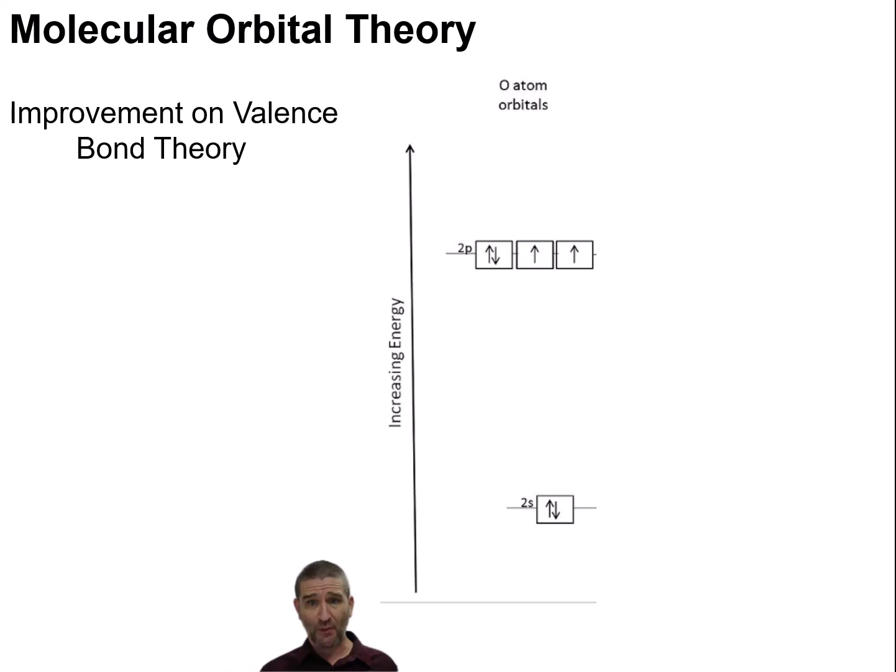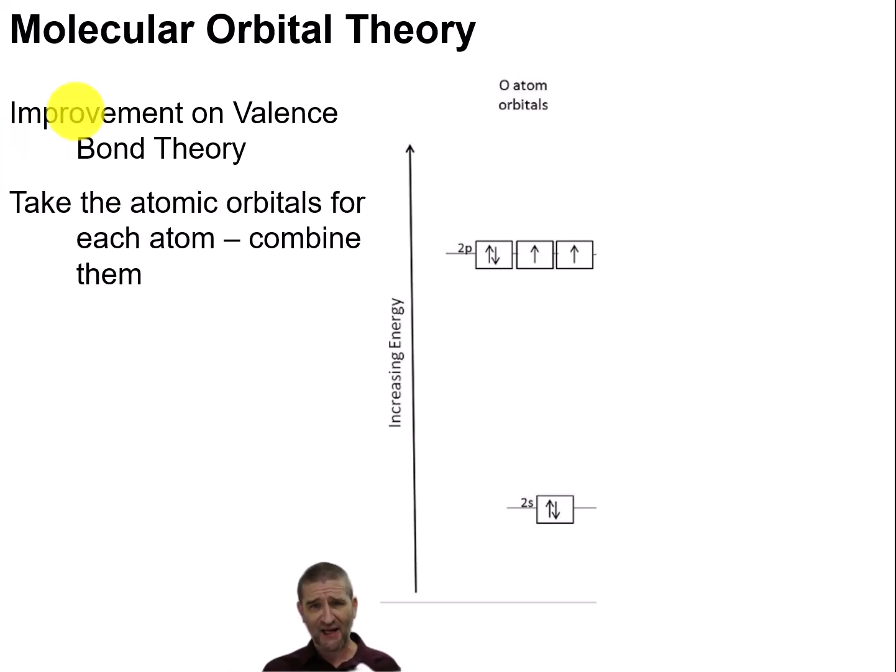In molecular orbital theory, we're going to take those atomic orbitals. Off to the side, you'll see we have atomic orbitals filled up for oxygen, just looking at our 2s orbital and our 2p orbital. If we were to take atomic orbitals for each of our two atoms, and here I'm going to try to make the oxygen molecule in a second, we're going to combine the orbitals of two oxygen atoms.